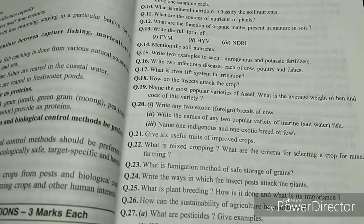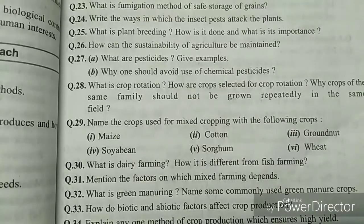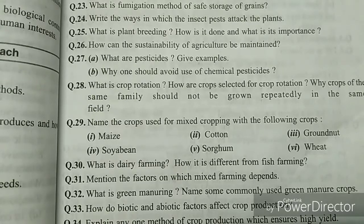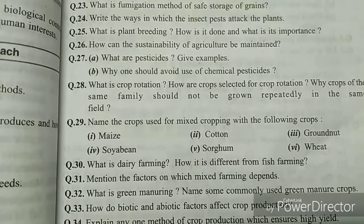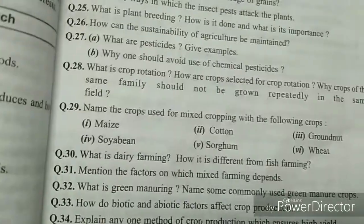Question number 28 is on crop rotation — another important question. Question 32 is also important — on green manuring. Be clear with all these terms. Explain any one method of crop production which ensures high yield — the answer could be a note on crop rotation, mixed cropping, or related methods already studied.